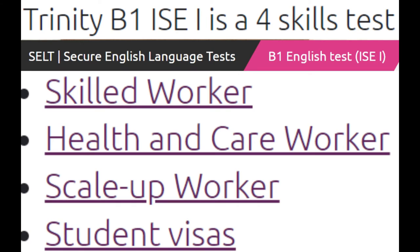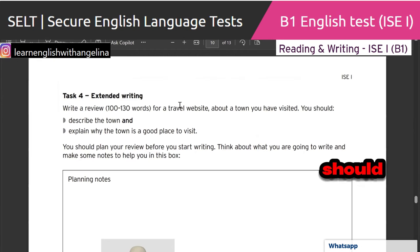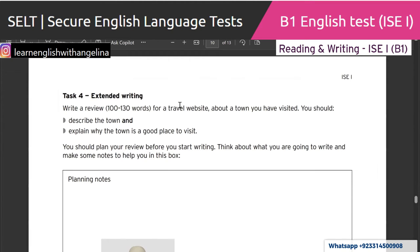Trinity B1 ISE1 — Four Skills Test. CELT Secure English Language Tests. B1 English Test ISE1 for skilled worker, health and care worker, scale-up worker, student visas. Write a review of 100 to 130 words for a travel website about a town you have visited.